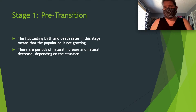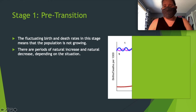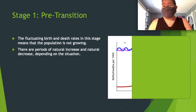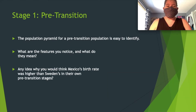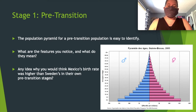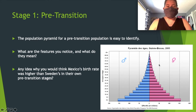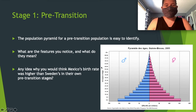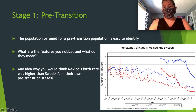The fluctuating birth and death rates in the pre-transition stage mean the population is not growing consistently — there are periods of natural increase and natural decrease depending on the situation of the time. Outside forces keep the birth and death rates in flux. The population pyramid for a pre-transition population is easy to identify: it has a big base at the bottom and tapers its way up.